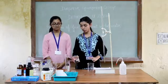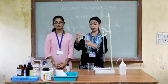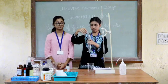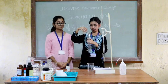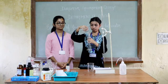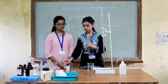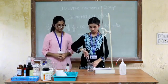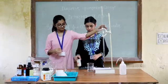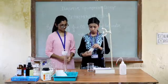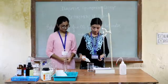Now we will take this tap water. We will take 100 ml of tap water. Then we will add 2-3 drops of phenolphthalein indicator.